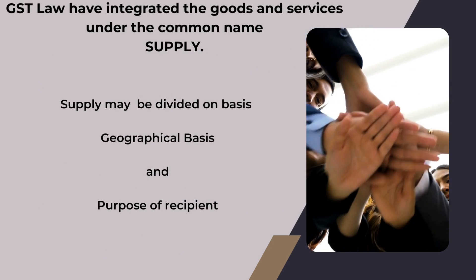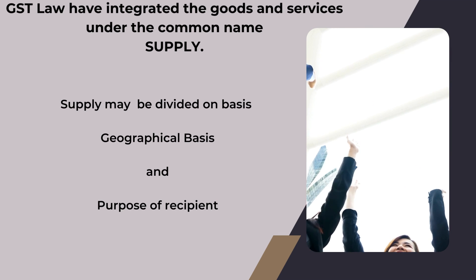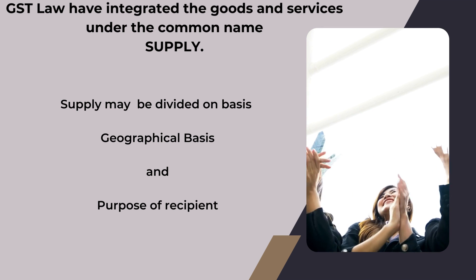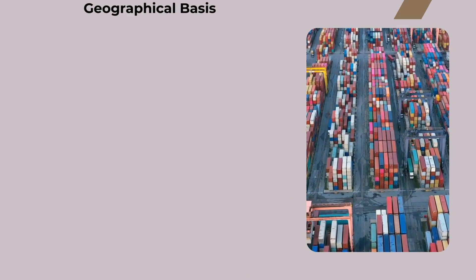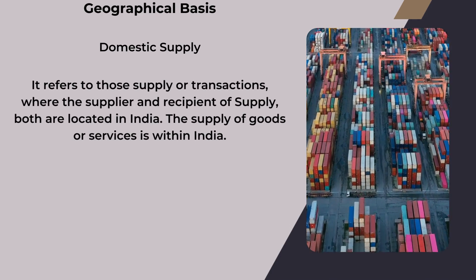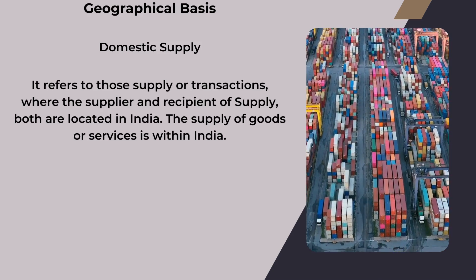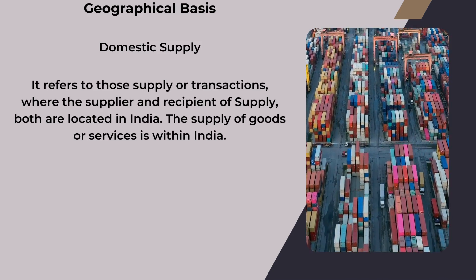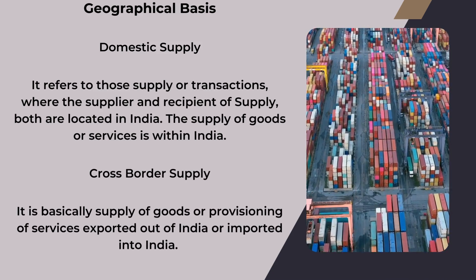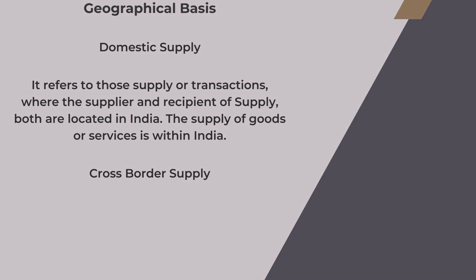GST law has integrated goods and services under the common name 'Supply.' Supply may be divided on a geographical basis. Domestic supply refers to those supplies or transactions where both the supplier and recipient are located in India and the supply of goods or services is within India. Cross-border supply is basically the supply of goods or provisioning of services exported out of India or imported into India.